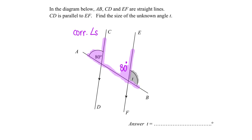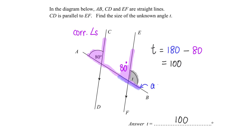And therefore I will be able to get T easily, because this is a straight line. So my T is simply 180 minus 80, to give me 100. The property we are using is adjacent angles on a straight line. We have come to the end of this part of the problem solving — let's move on to the next question.